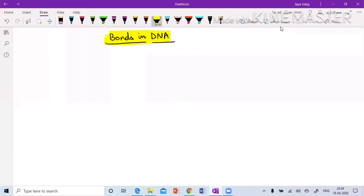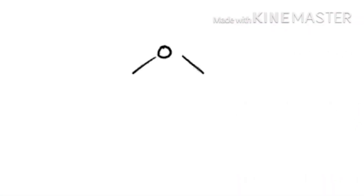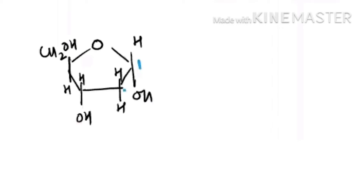Hello students, today we are going to study the different types of bonds present in DNA. This is the deoxyribose sugar — first carbon, second carbon, third, fourth, and fifth carbon. It is making a glycosidic bond with the first position, and the glycosidic bond is made with the nitrogenous base.